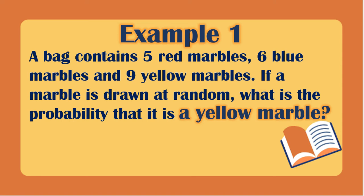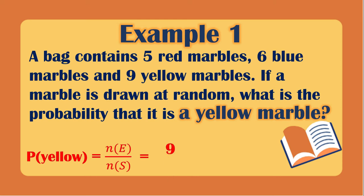What is the probability of getting a yellow marble? Using the same formula, the favorable outcome is 9 yellow marbles over 20. Can we simplify 9/20? No, we cannot. So the final answer is 9/20 chance of getting a yellow marble.